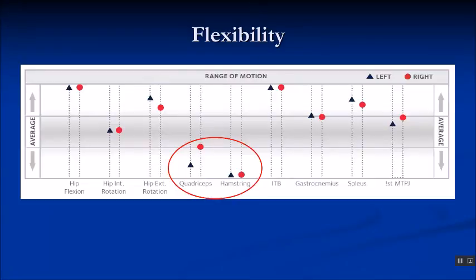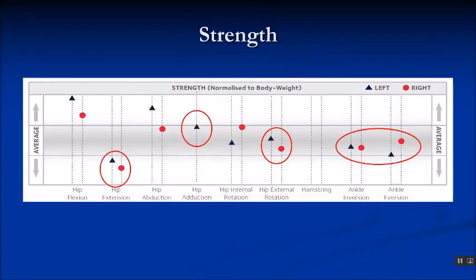We can also look at strength and flexibility and map this against the database. We can clearly see that there is quadriceps and hamstring inflexibility which will need to be addressed. When we look at strength, it's notable that there's a reduction in hip extension, and although hip adduction and external rotation are within the normal range, for the level she wishes to perform at it would be preferable to improve this strength, which can help with the excessive hip adduction.